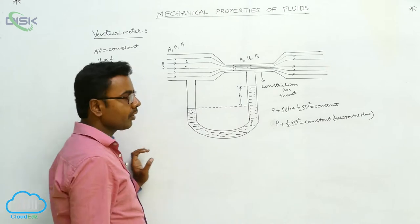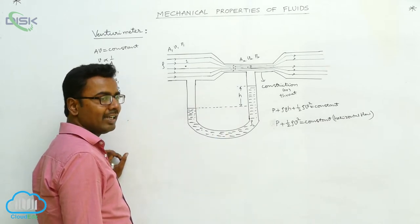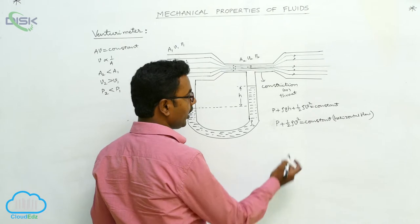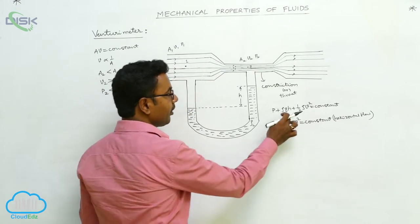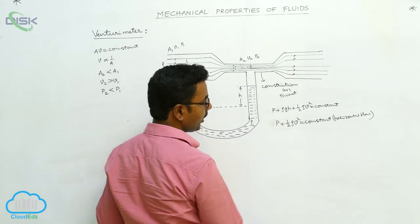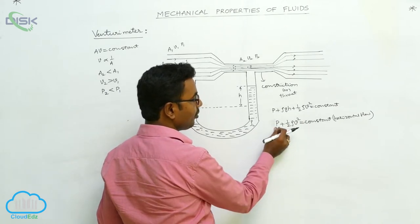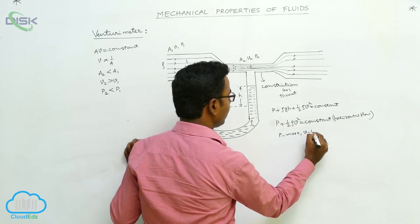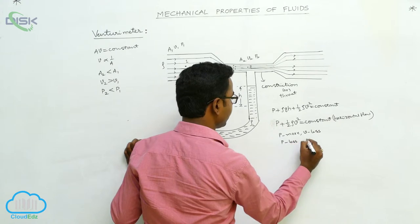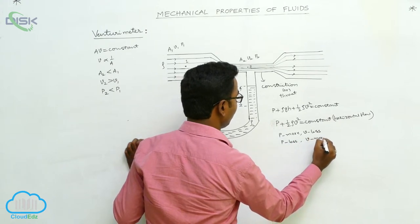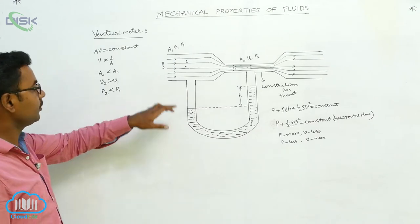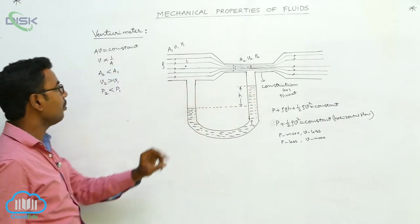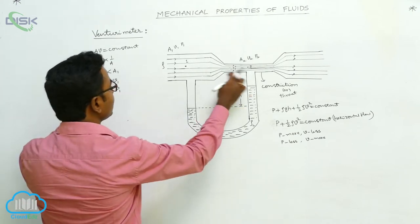For horizontal flow, both points are at the same height, so H1 equals H2, and no work is done against gravity, so the height term drops out, giving P plus one-half rho*V squared equals constant. Where pressure is more, velocity is less; where pressure is less, velocity is more. Since V2 is greater than V1, we conclude P2 is less than P1.